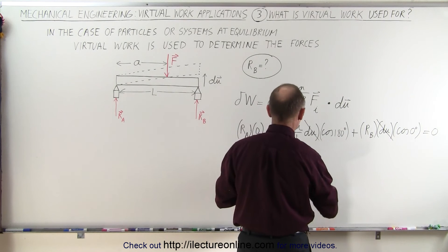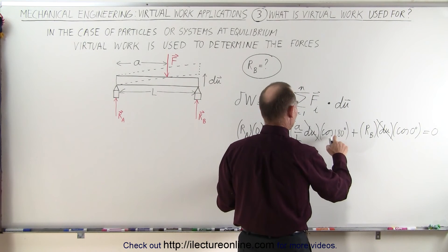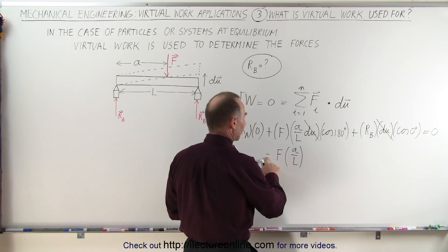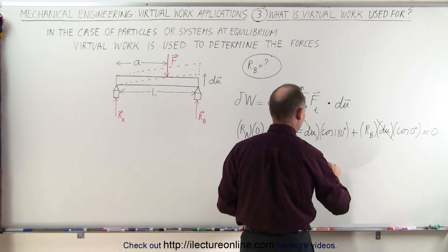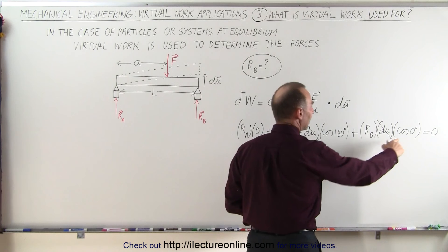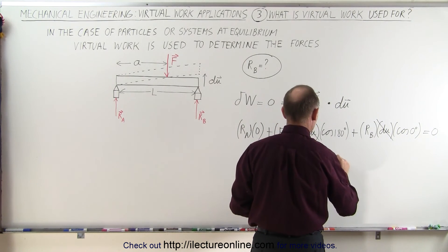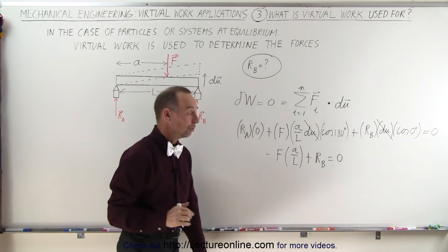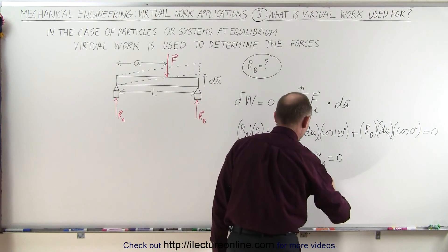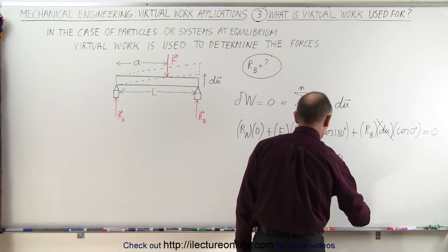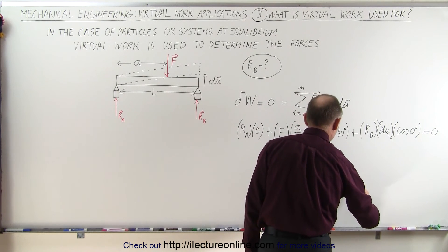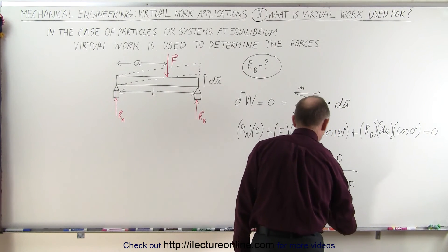So we have F times A over L times the cosine of 180, which is minus one. That's where this minus came from. And then here we have plus R sub B, the reactionary force of B, times the cosine of zero, which is one, and that adds up to zero. And then all we have to do is move this term to the other side. And so therefore, the magnitude of the reactionary force of B is equal to A over L times the force applied to the beam.